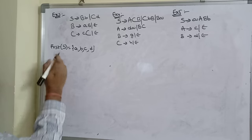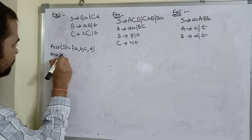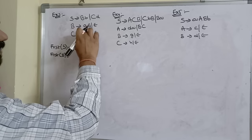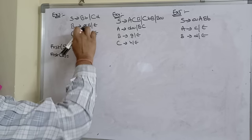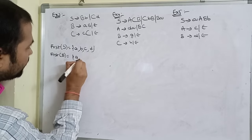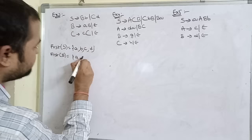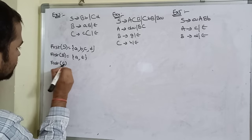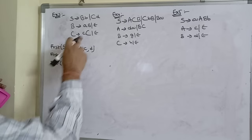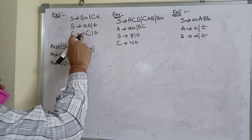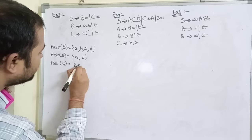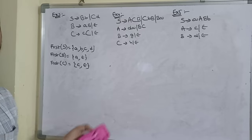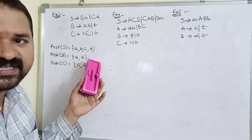FIRST of B = {a, epsilon} (from productions A·B and epsilon). FIRST of C = {c, epsilon} (from productions c·C and epsilon).